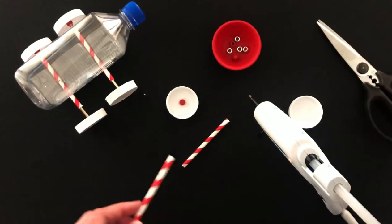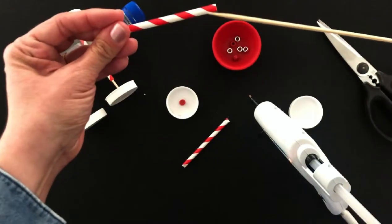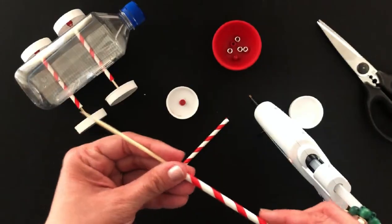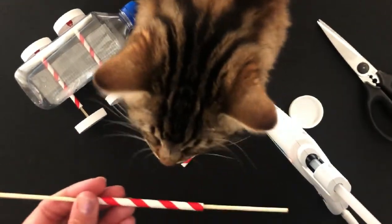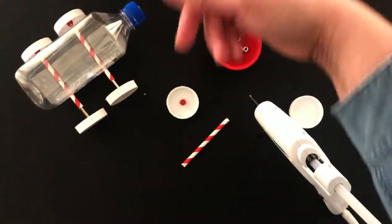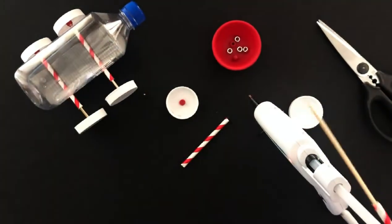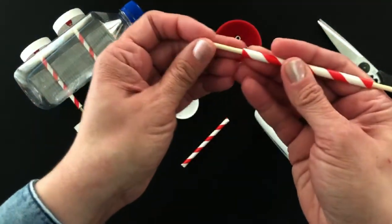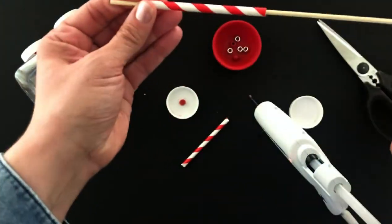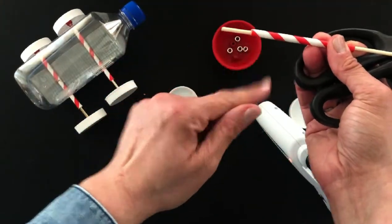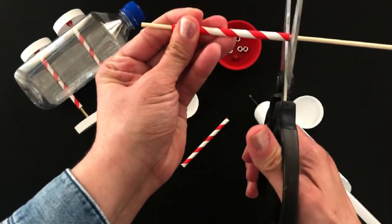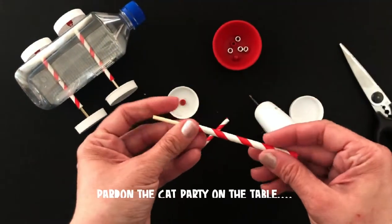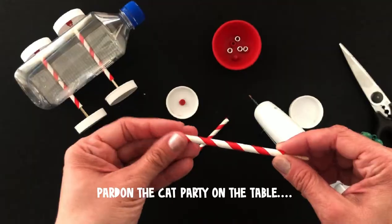Then you're going to grab your skewer and my cat is just about to photobomb this video here. See you later cat, I love you, but we're making cars here today. What you're going to do is you're going to cut your bamboo skewer about one inch longer than your straw section. And here you have the first parts of your axle.